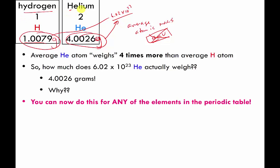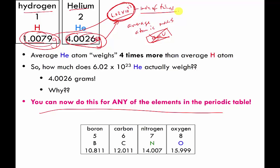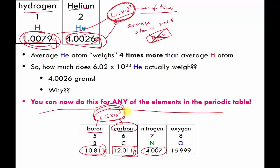This works not just for hydrogen and helium — you can use these numbers for any of the 118 elements in the periodic table. For a lot of you this is a difficult idea, so we're going to do drills. For example: if I have 10.811 grams of boron atoms, then I have 6.02×10²³ boron atoms. If I have 6.02×10²³ carbon atoms, it weighs 12.011 grams. These numbers and this count are interconvertible.